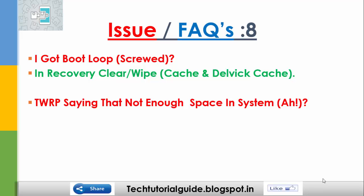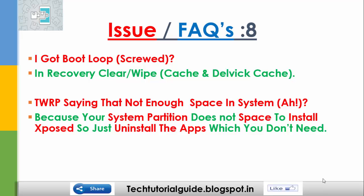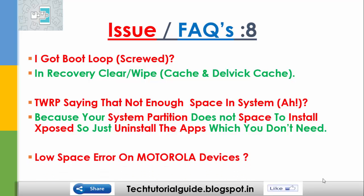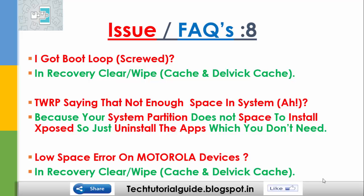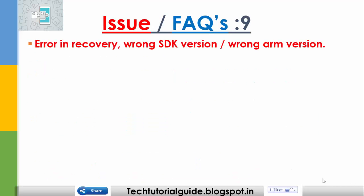If TWRP says there is no space in the system partition, it means your system partition does not have space to install Xposed. Uninstall apps you don't need, then install Xposed and it will work normally. For low space issues on Motorola devices, just wipe the cache in recovery.